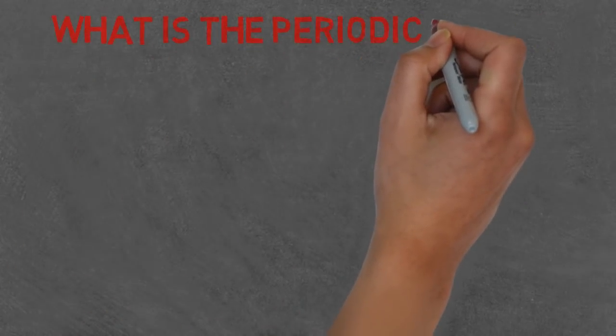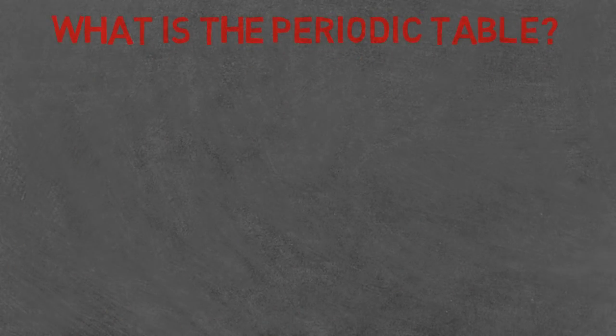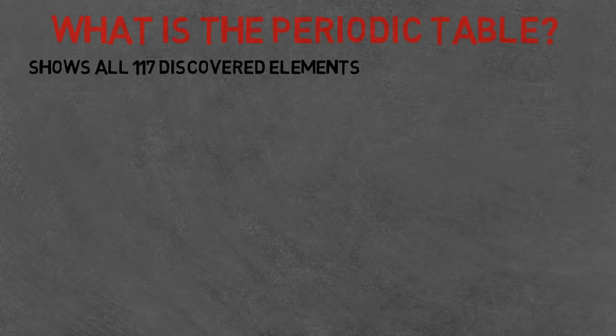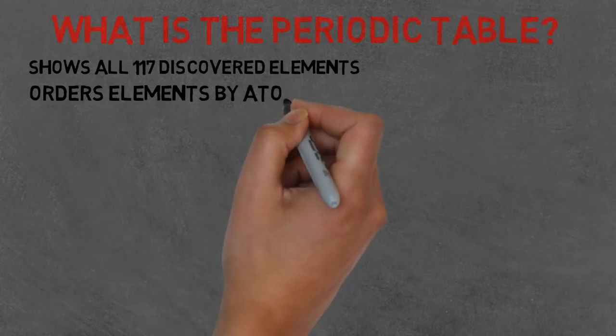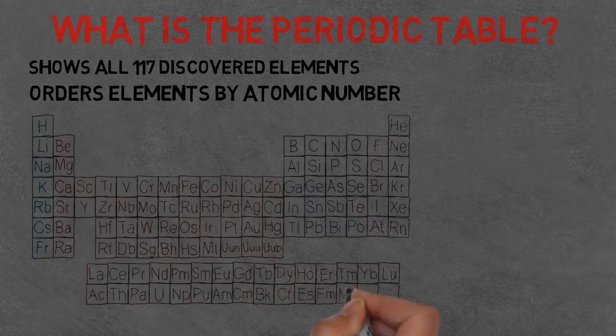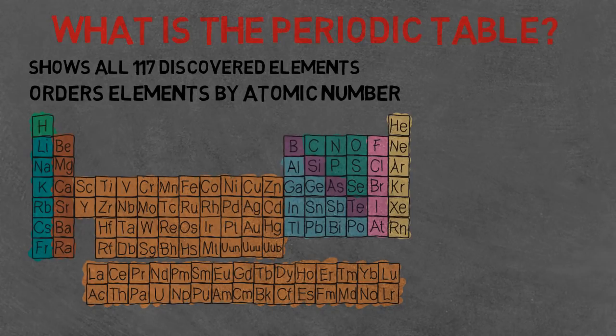Now if only we had something to show all 117 discovered elements. Oh wait, we do! It's called the periodic table. The periodic table is a system that categorizes all the known elements. Don't forget there could be hundreds of not discovered elements yet, based on their atomic weight.